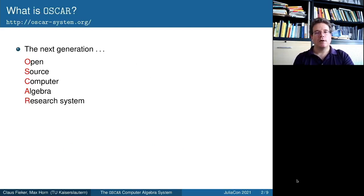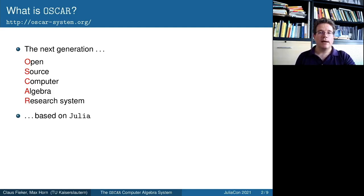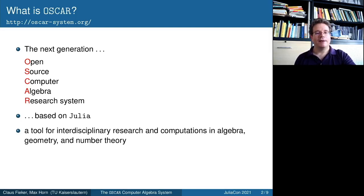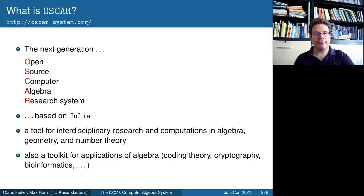What is OSCAR? The abbreviation OSCAR stands for Open Source Computer Algebra Research System, and I think this already describes quite well what it is about. Of course it is based on Julia. It's really a tool for interdisciplinary research and computations in algebra, geometry, number theory, and other related areas.